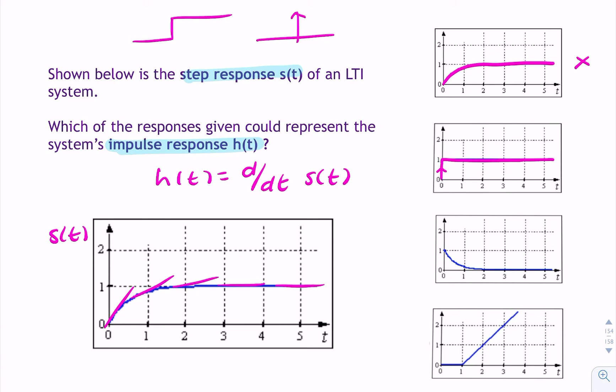Whereas here, we have the gradient, which is positive, less positive, less positive, until it approaches 0.